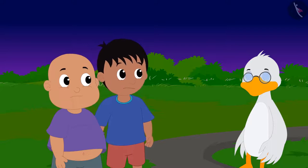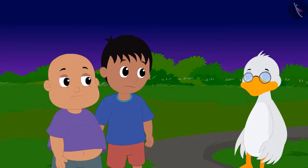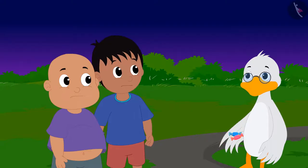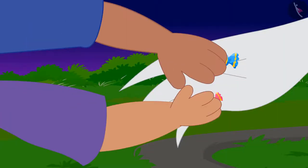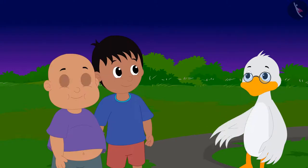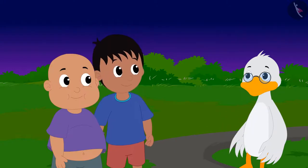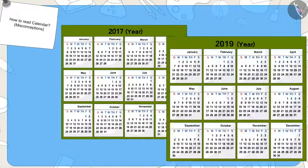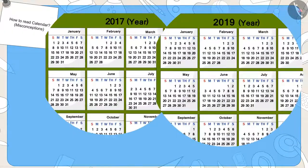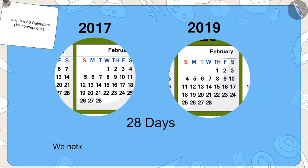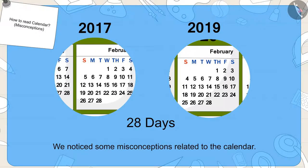Raju and Bablu now understood why Jeev did not come. Uncle also gave them one toffee each to make them happy. Raju and Bablu look so happy after eating the toffee. Children, in this video we saw some misconceptions related to the calendar.